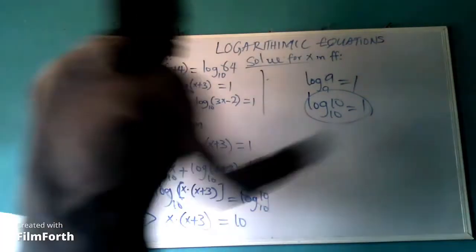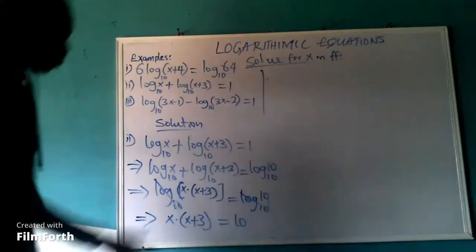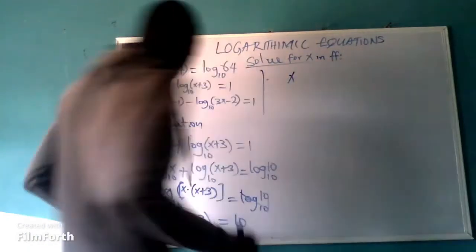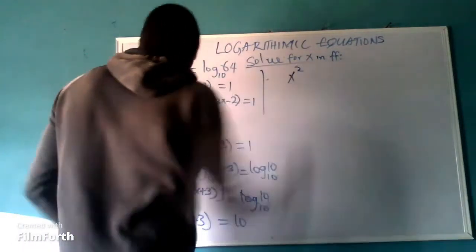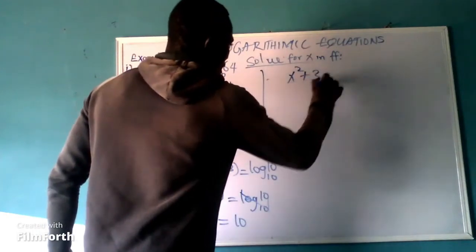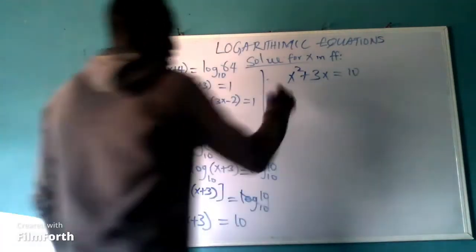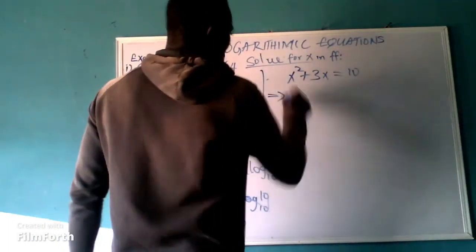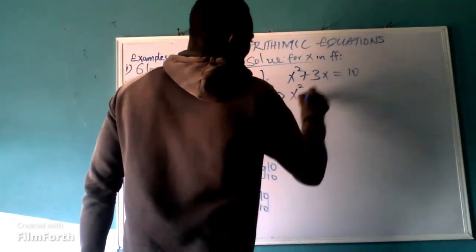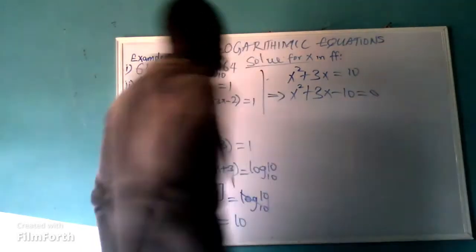If we expand the brackets: x times x is x squared, x times 3 is 3x, so we get x squared plus 3x equal to 10. Rearranging, this is a quadratic equation: x squared plus 3x minus 10 equal to 0.